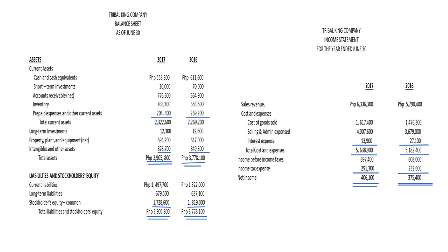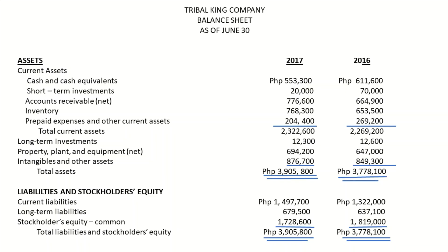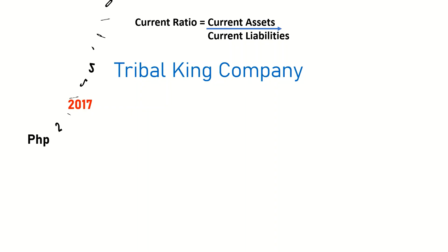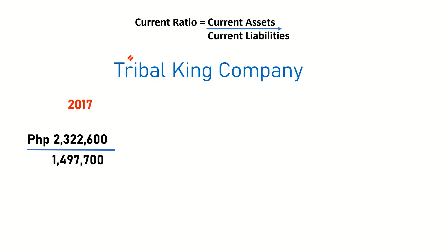For the year 2017, the current assets of the company is 2,322,600 pesos, and the current liabilities of the company is 1,497,700 pesos.